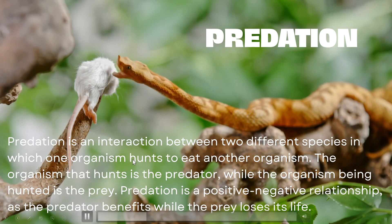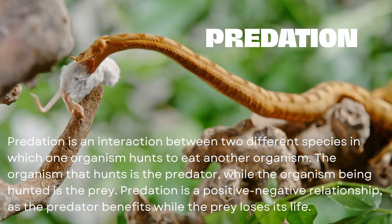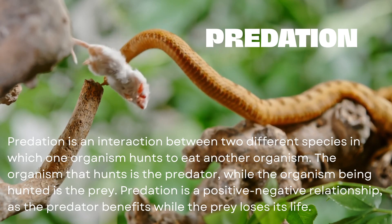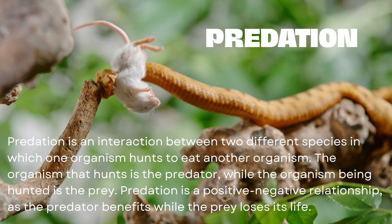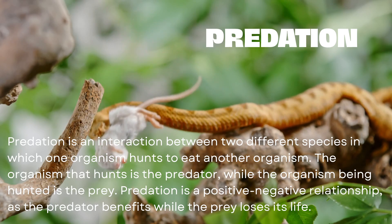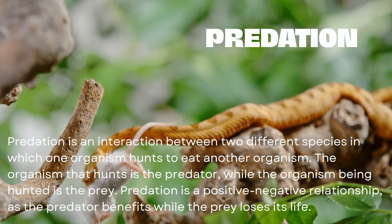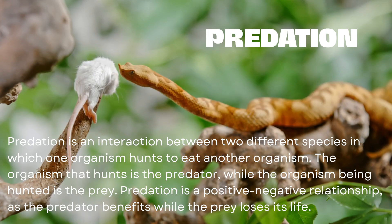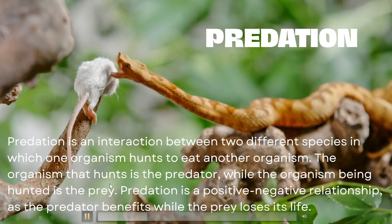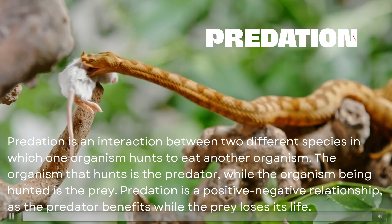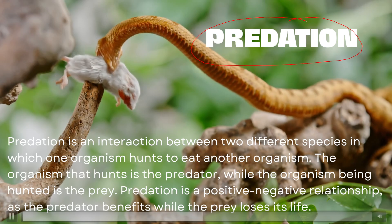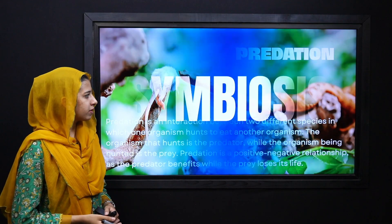As you can see in this video, a snake is the predator while a mouse is the prey. So the organism that hunts is called the predator, and the organism that is hunted acts as the prey. This type of relation is called predation.